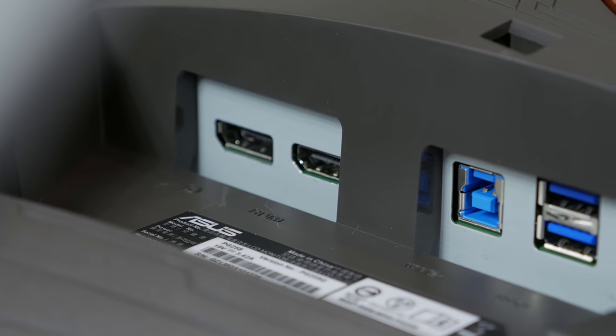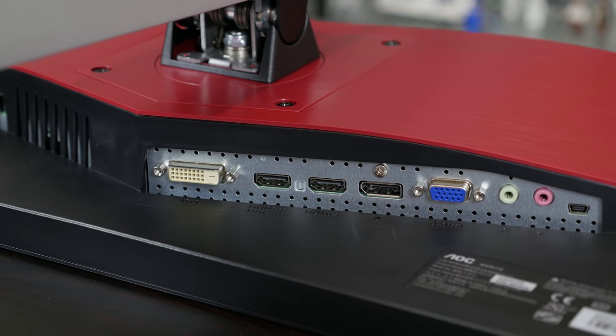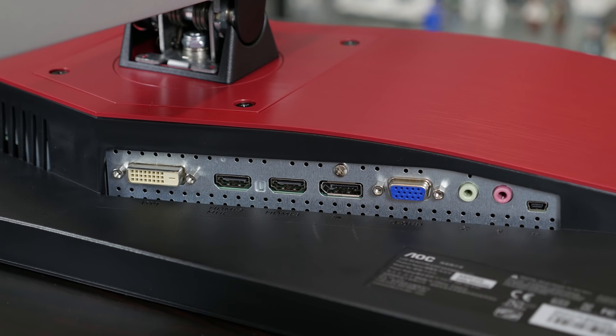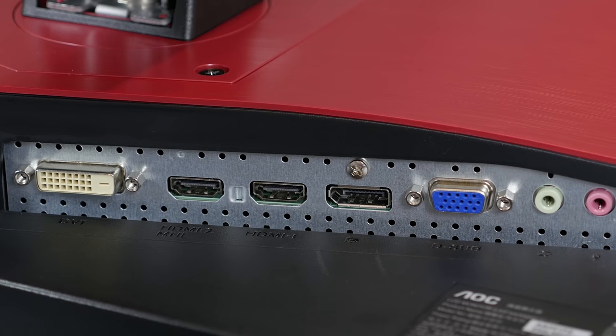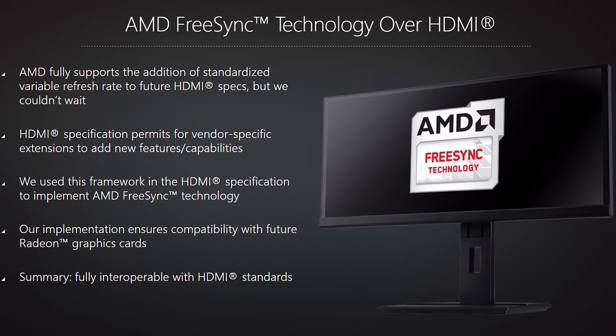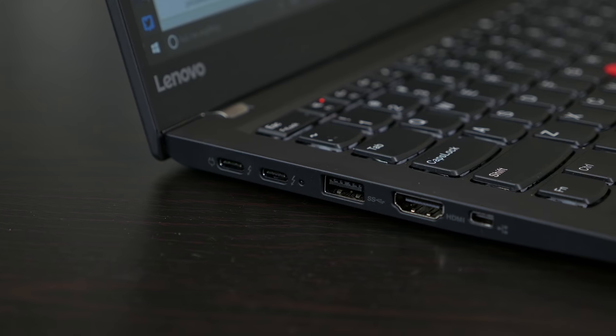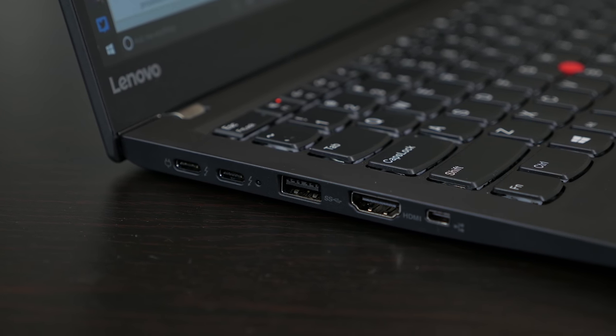As G-Sync monitors use a proprietary scaler module, most displays are limited to just DisplayPort and HDMI for connectivity, with only DisplayPort supporting Adaptive Sync. FreeSync on the other hand uses standard display scalers, so FreeSync monitors often have many more connectivity options including multiple HDMI ports and legacy connectors such as DVI and even VGA. FreeSync has another connectivity advantage through a feature called FreeSync over HDMI. AMD has managed to get Adaptive Sync working over standard HDMI connectors and cables, provided both the GPU and monitor support the feature. HDMI cables are much cheaper than DisplayPort cables, and devices with limited room for ports such as laptops can use the more widely adopted HDMI standard without losing support for Adaptive Sync.